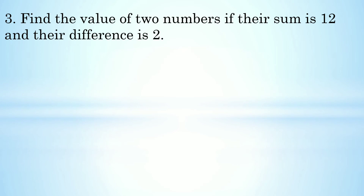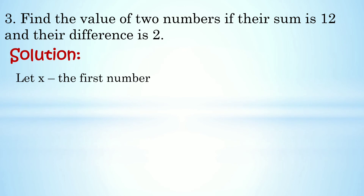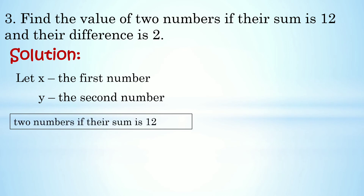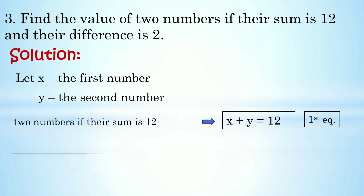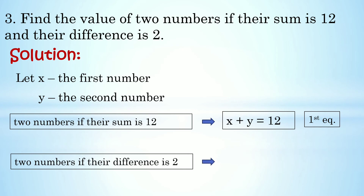Number 3: Find the value of two numbers if their sum is 12 and their difference is 2. Ang target natin, hanapin yung dalawang numbers na kapag in-add ay equals sa 12 at kapag nag-minus ay equals sa 2. Using system of linear equations in two variables, mas magiging tama yung ating sagot. Let x be the first number and let y be the second number. So x + y = 12 and x - y = 2.